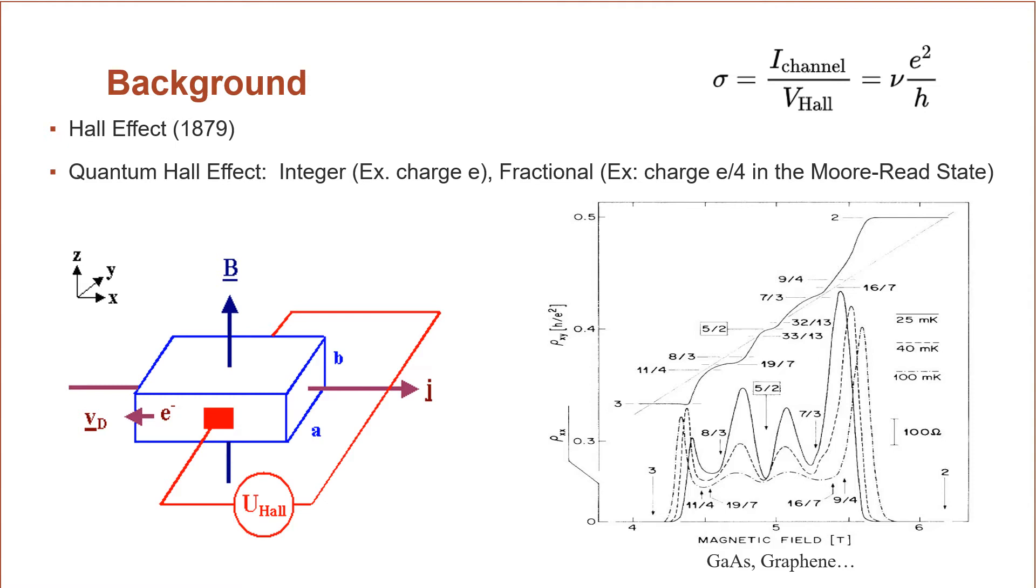However, if the first level is only partially full, now you will have some emergent particles that may have charge of, for example, e over 4, which is seen in the Moore-Read state, the sort of prototypical non-abelian anyon state. Now these quantized Hall conductances have been seen in many materials, including gallium arsenide and graphene. And it has been shown that the filling factor, or nu in that equation in the top right, actually corresponds to a particular value for a given Landau level filled state. So the 5 halves state is the one that corresponds to the Moore-Read state.